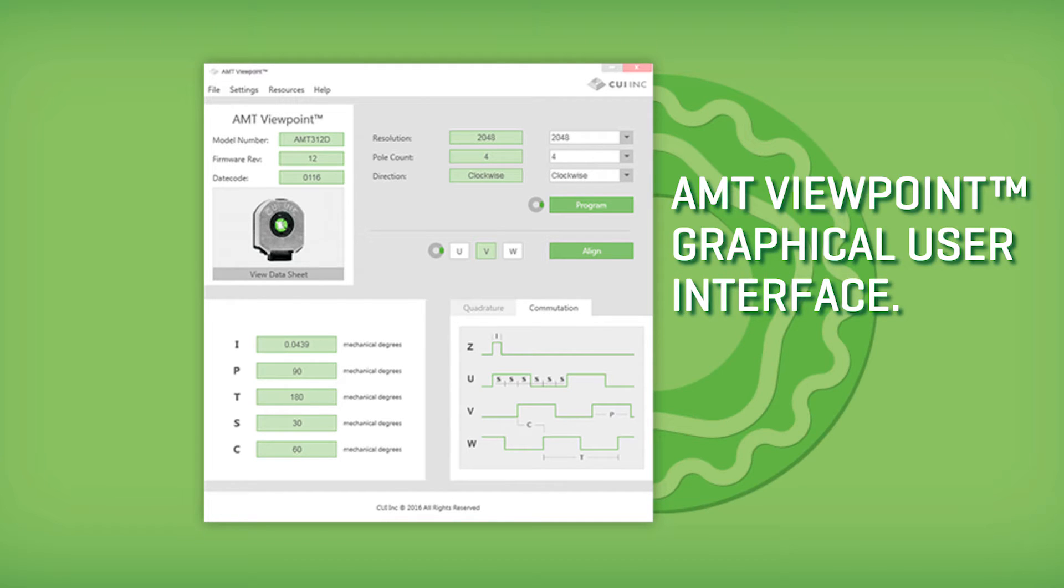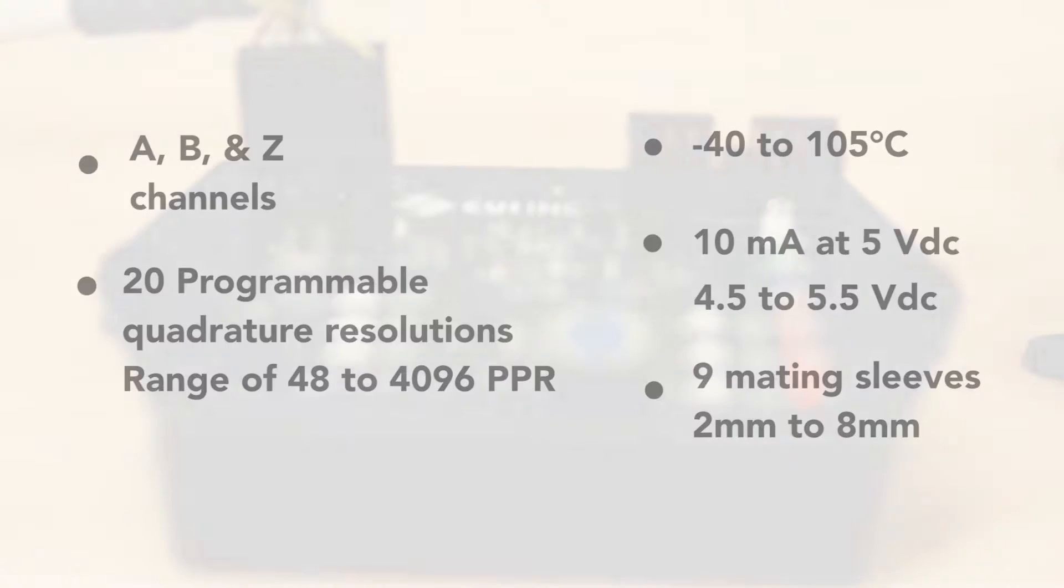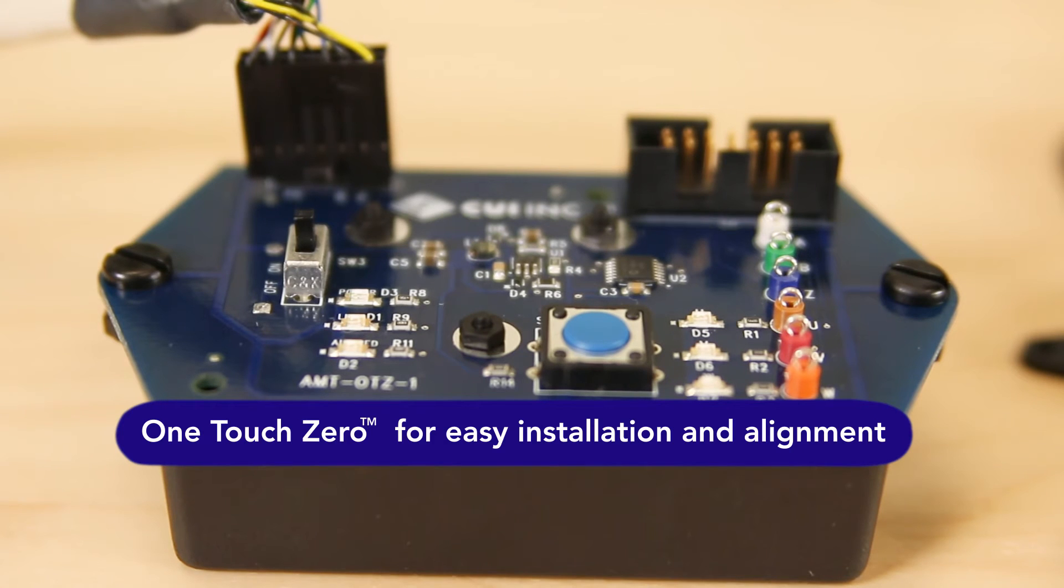The series also offers supplementary A, B, and Z channels for servo positioning and startup sequences. 20 programmable quadrature resolutions are available with a range of 48 to 4096 PPR. Now let's explore the one-touch-zero function for easy installation and alignment.